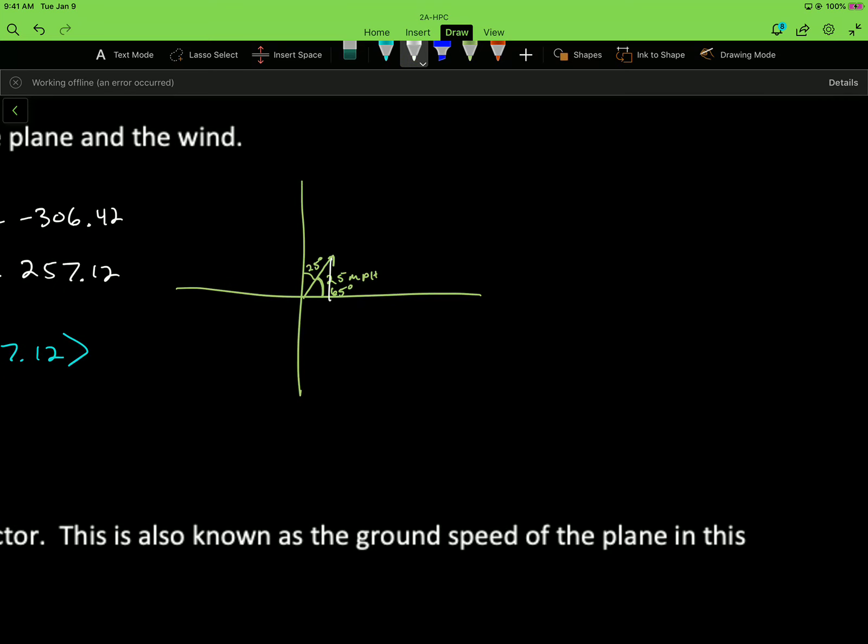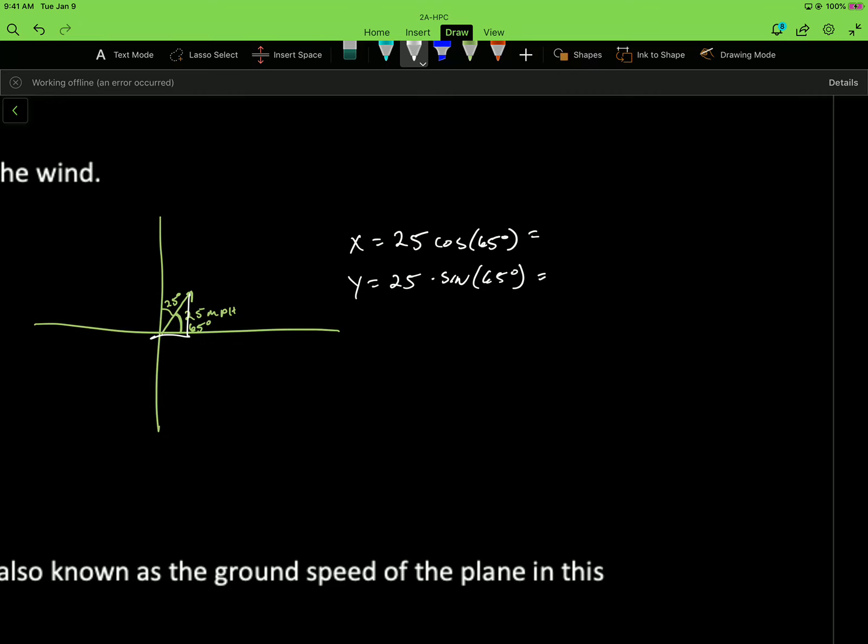And so we want to find our X and Y components. X is going to be equal to our magnitude times cosine of 65 degrees. Y is going to be equal to the magnitude times sine of 65 degrees. You can pause the video here and see if you agree. So I'm getting for an X component 10.57, and for our Y, 22.66.